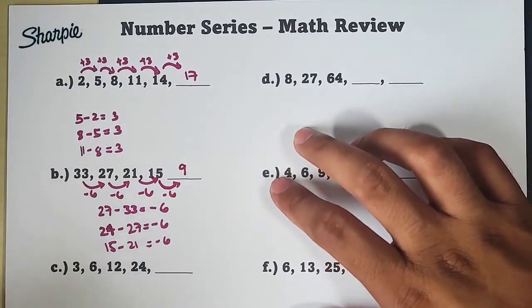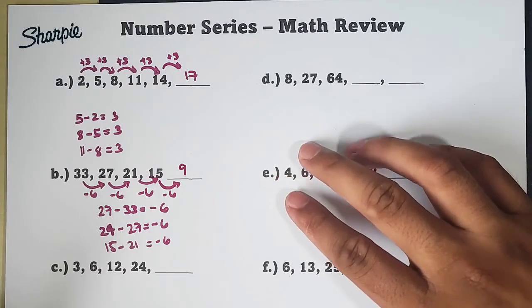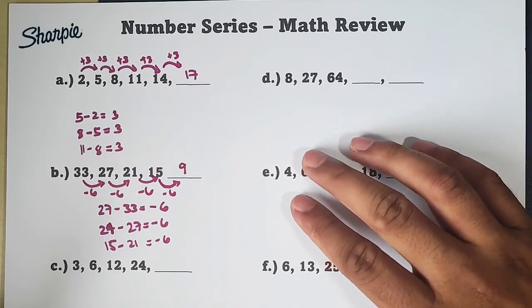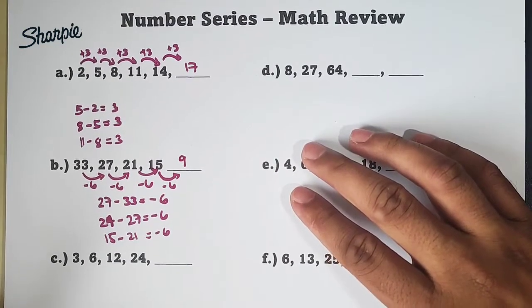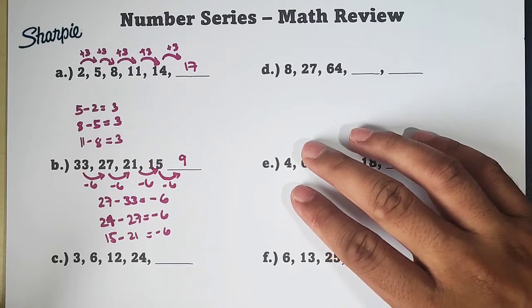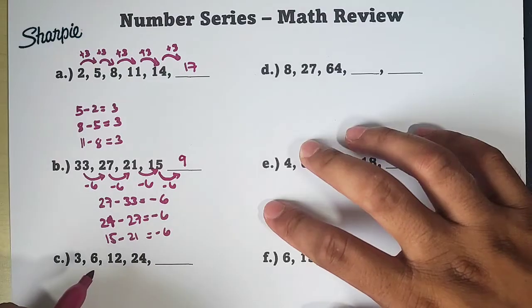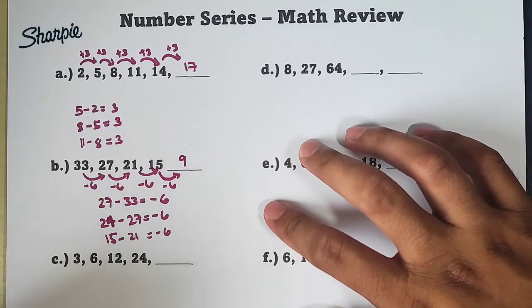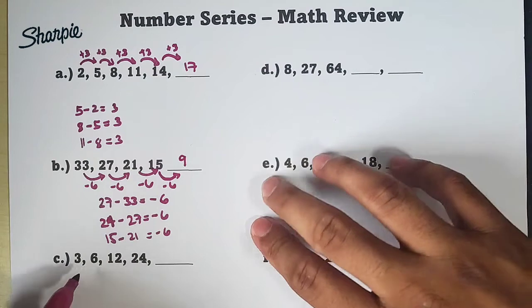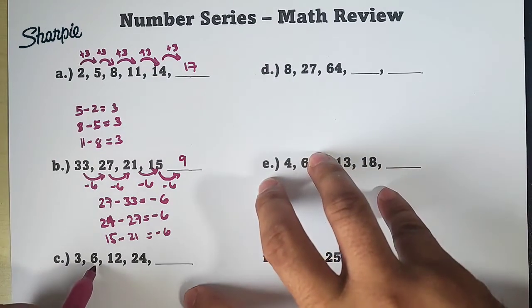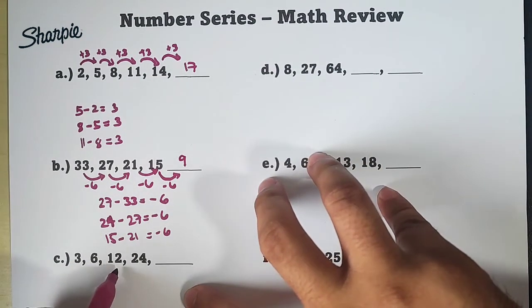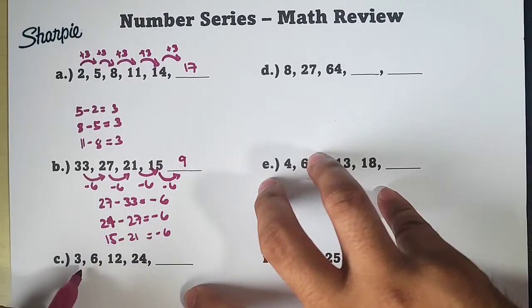So, let's proceed with letter C. Sa letter C natin, guys, dito, tatasok natin ng konti. Meron tayong 3, 6, 12, 24. Dito, nakikita ko na agad kung paano ginagawa to. Anong nangyayari dito is that, look, 3 naging 6, 6 naging 12, 12 naging 24. Ang naging pattern dito, nag-multiply lang tayo ng 2.